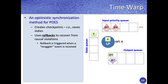Event processing proceeds as usual: each logical process takes the next available lowest-timestamp event and starts processing it, updates its local virtual time to the corresponding time, generates whatever output events are needed, and at the end of the cycle, the state of the logical process is saved.